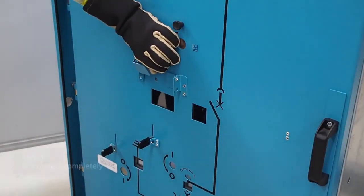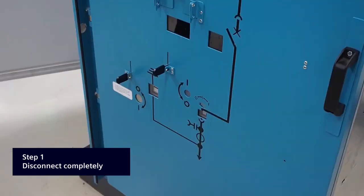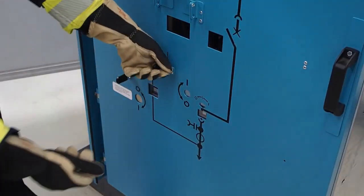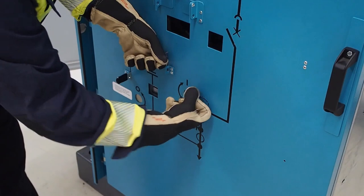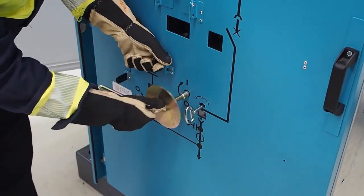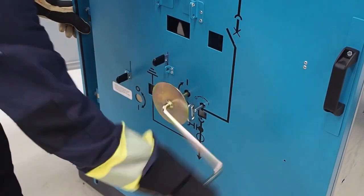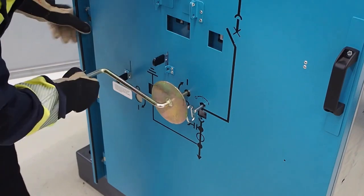The first step is to switch off the circuit breaker and make sure that the incoming feeder for energizing the bus bar is switched off. Then withdraw the circuit breaker from its panel and place it in the test position.